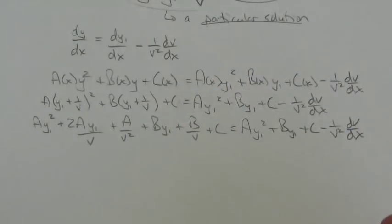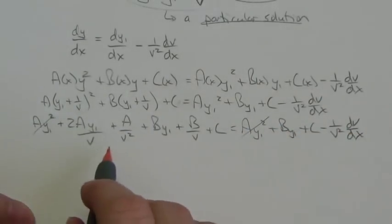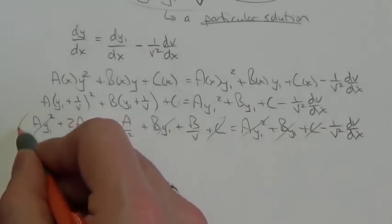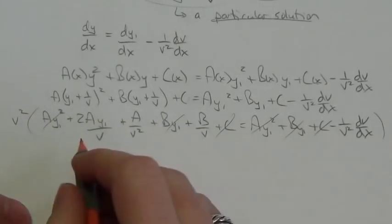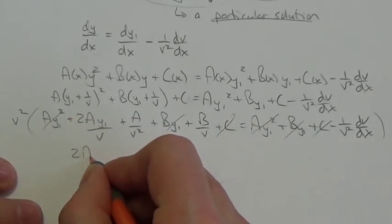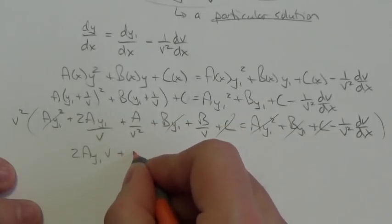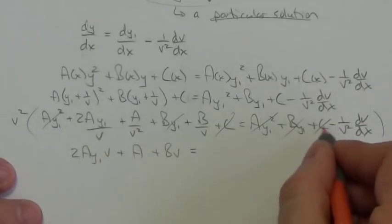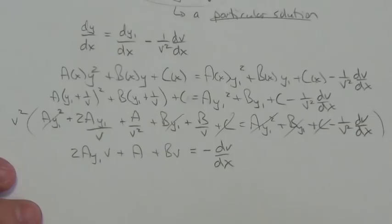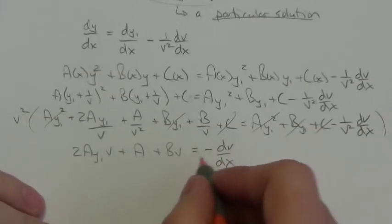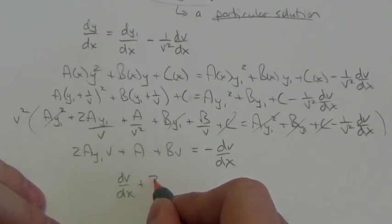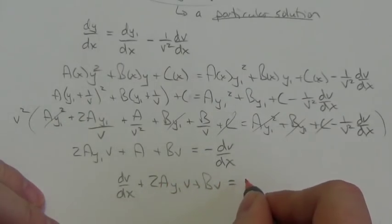After the cancellations and multiplying by v², what remains is: dv/dx + (2a·y1 + b)·v = negative a. This is the key result — I've reduced a first-order quadratic differential equation to a first-order linear differential equation, where the independent variable is now v. I can solve this for v and then work back to find y.